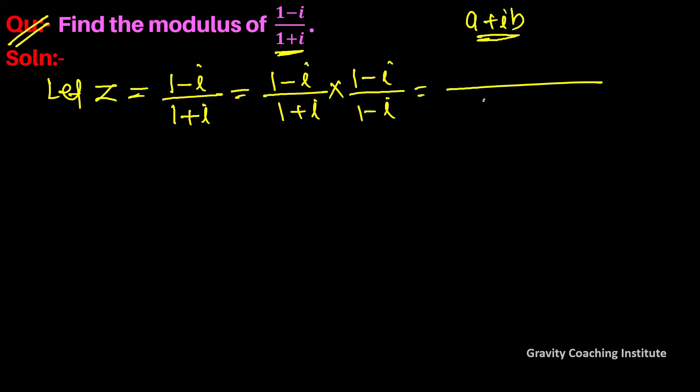So this equals 1 square minus iota square, and this becomes (1 minus iota) whole square. So z equals... We'll use the (a minus b) whole square identity, so this becomes 1 minus 2 iota plus iota square upon 1. The iota square value is minus 1, so we get 1 plus 1.